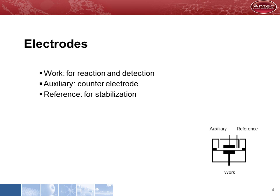Our flow cells have three electrodes. The working electrode is where the reaction takes place. The auxiliary electrode is the counter electrode needed to close the electric circuit. A reference electrode is added to the circuit to stabilize the applied potential.